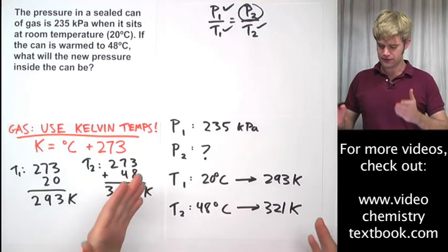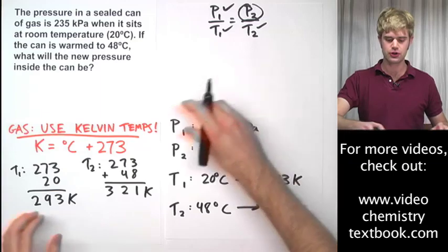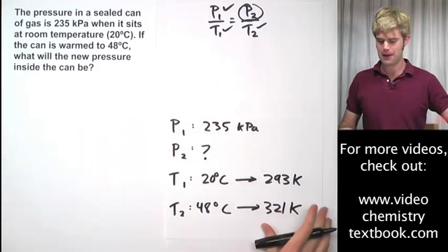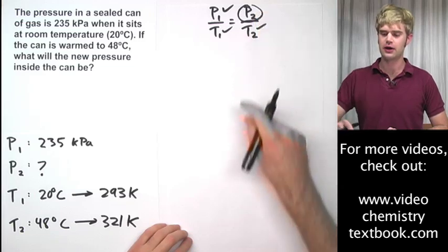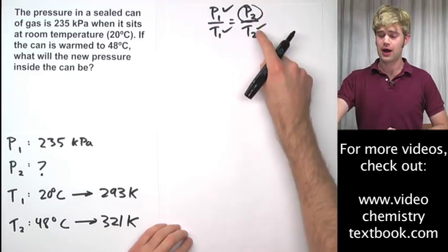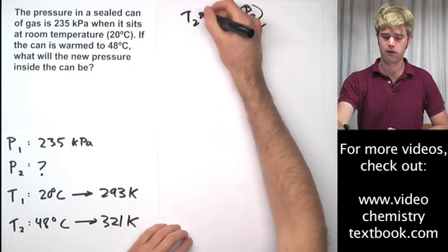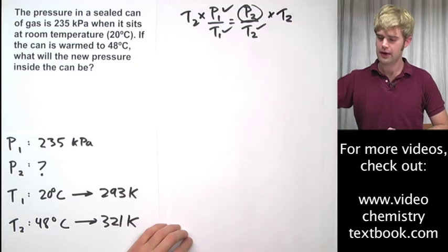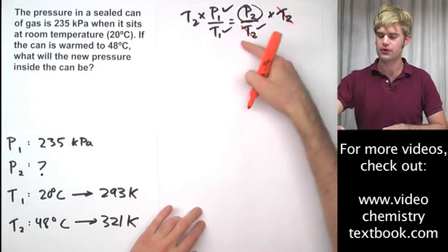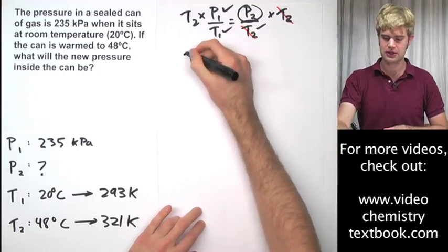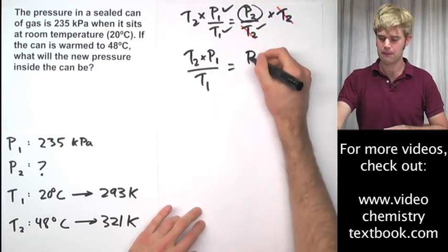So now that we've got these variables all set, let's go about rearranging this equation to get P2 by itself. So, the first thing that I want to do to get P2 by itself is get T2 here out of the denominator. And I'm going to do that by multiplying both sides by T2.